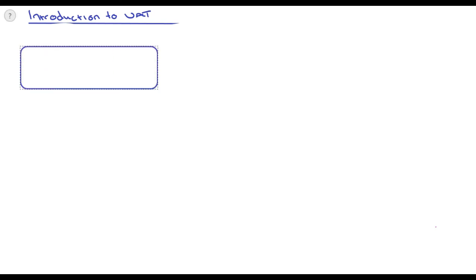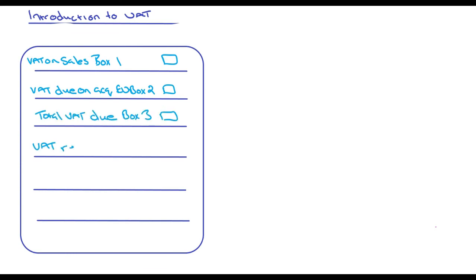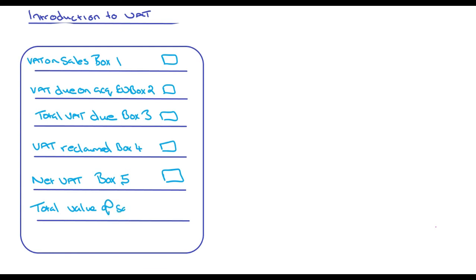Looking at an example VAT return: box one is VAT on sales (just the VAT element); box two is VAT due on acquisitions from the EU; box three is the total of boxes one and two; box four is VAT reclaimed on purchases in the period; and box five is the net value. If box three is greater than box four, we owe HMRC because output VAT exceeds input VAT. If box four is greater than box three, we can claim that VAT back from HMRC. Box six is the total value of sales in the period, and box seven is the total value of purchases — don't get them mixed up with the boxes at the top.